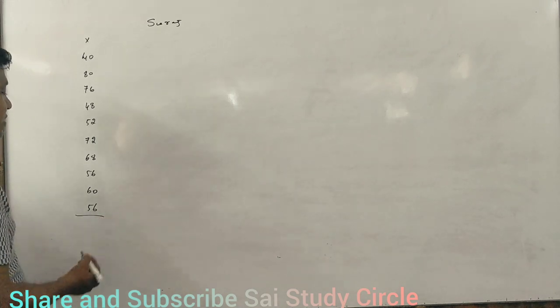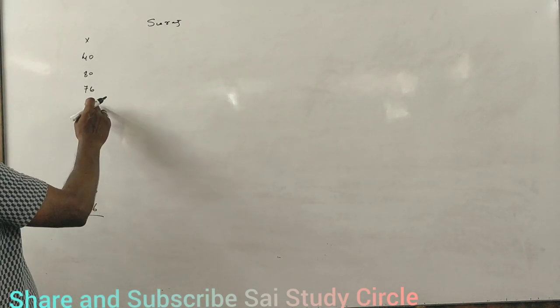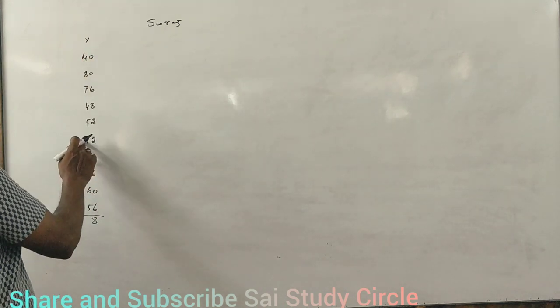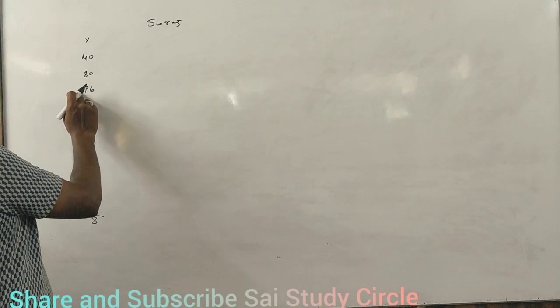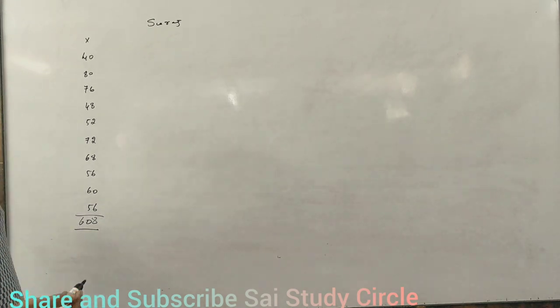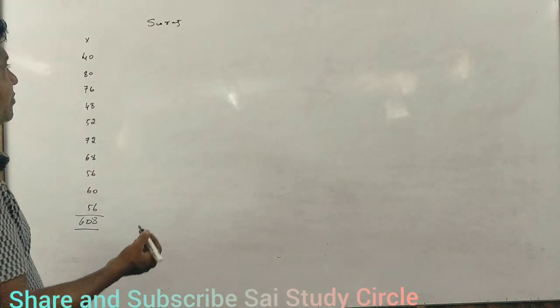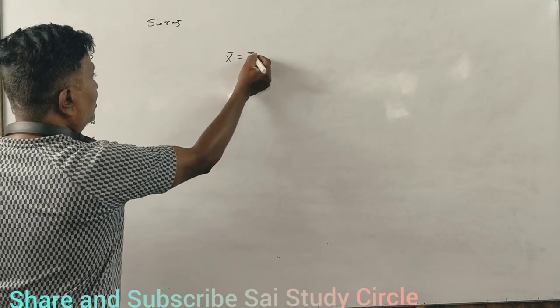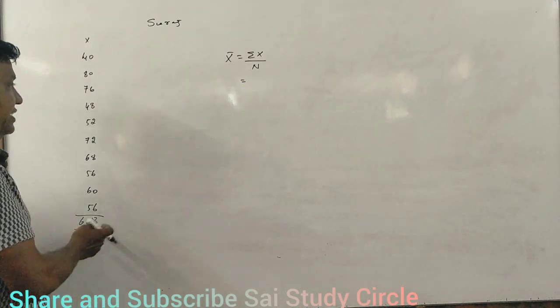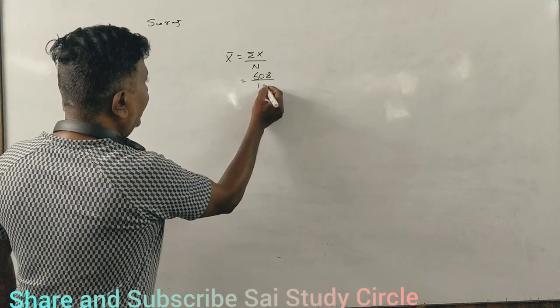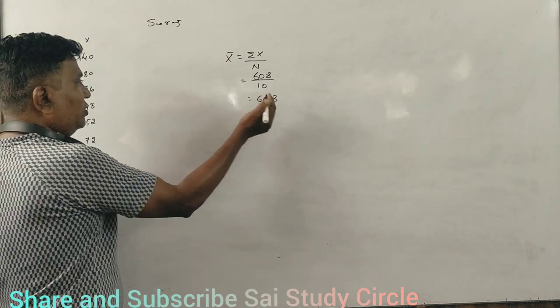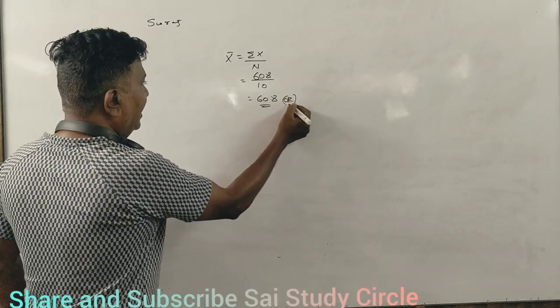First, total is 608. Mean is equal to summation x divided by n. 608 divided by 10 is 60.8. This is 61.